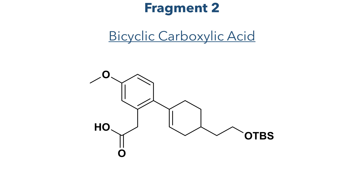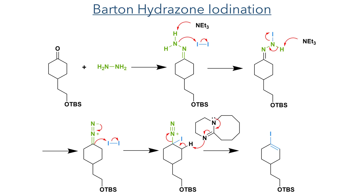We covered the retrosynthesis in last week's video, so let's jump straight into the construction of fragment 2. This started with an alkyl cyclohexanone and a Barton hydrazone iodination reaction. Reaction of the ketone group with hydrazine formed a hydrazone, which was iodinated using iodine and triethylamine as a base. Further iodination of the carbon centre and deprotonation of the alpha hydrogen promoted the elimination of nitrogen gas and yielded the target vinyl iodide.